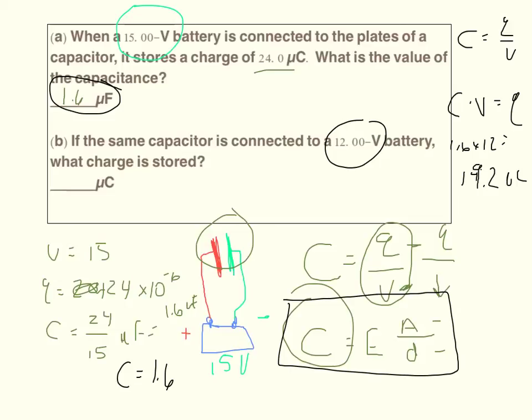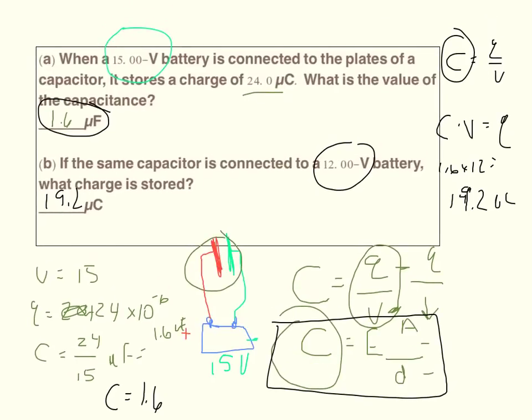So 19.2 microcoulombs. So I'll just write that: 19.2. A couple of things to keep in mind when you're taking a test: capacitance - so farads is the unit for capacitance, and the unit for charge is coulombs. So coulombs is the unit for charge. So don't get these two C's mixed up.